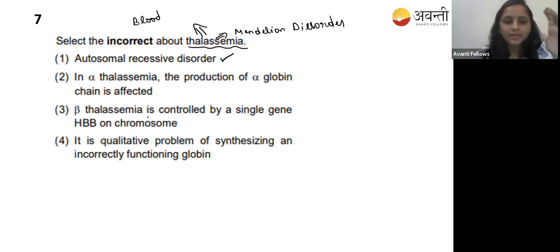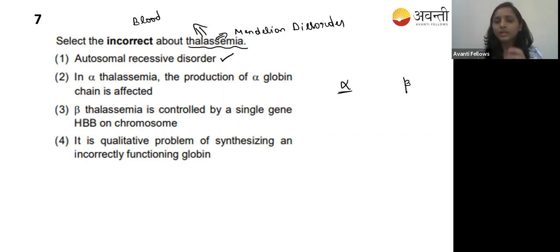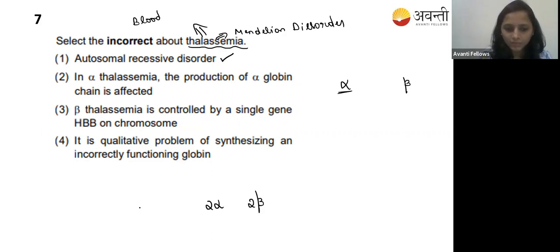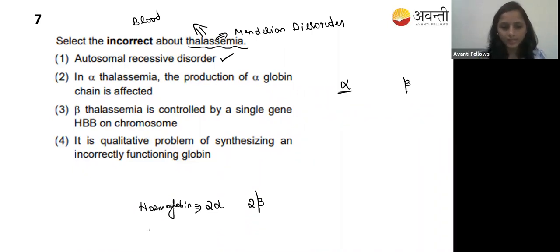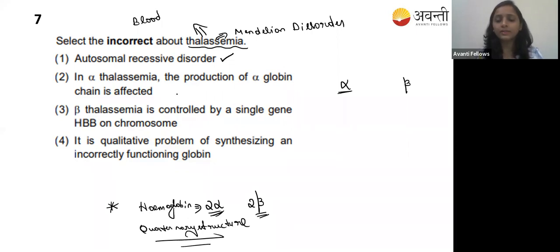Option two - in alpha thalassemia, the production of the alpha globin chain is affected. Yes - hemoglobin is a tetramer with two alpha and two beta chains, giving it a quaternary structure. If the alpha chain is not produced correctly, it leads to alpha thalassemia; if the beta chain is affected, it leads to beta thalassemia.